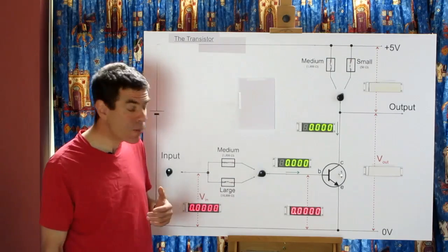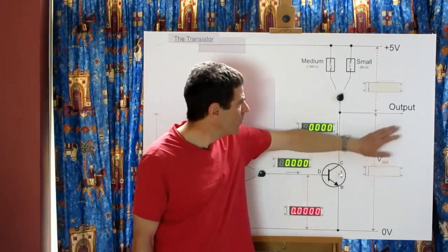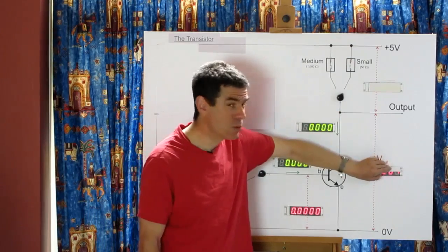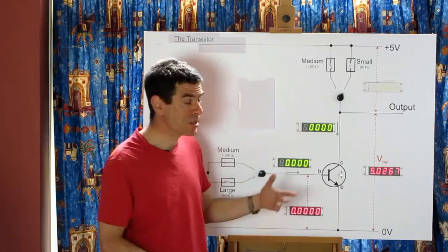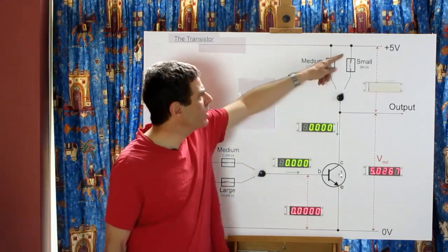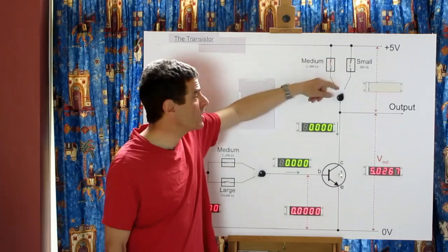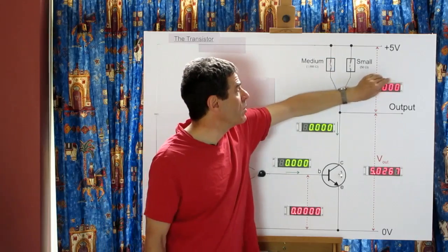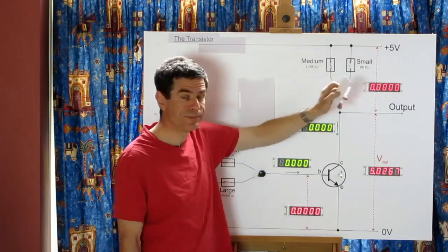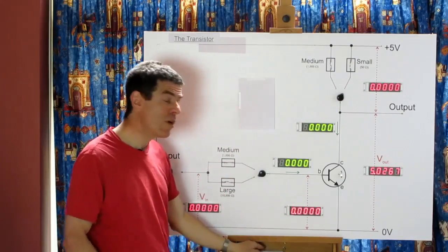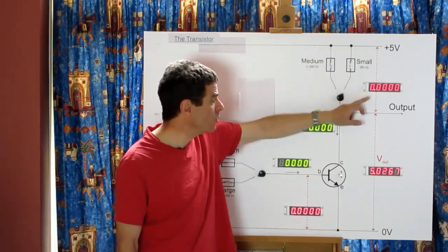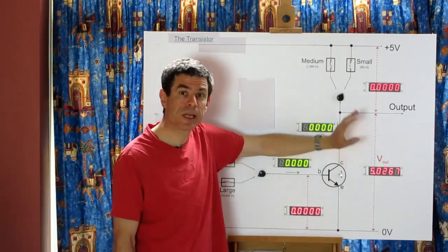Now let's look at the output side of the circuit. I'm measuring the output voltage with this meter here — currently it's at 5 volts. I'm also measuring the voltage drop across the collector resistor, and at the moment no current is flowing, so that reads zero. This is a 5 volt system, so these two meters must add up to 5.